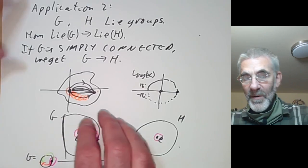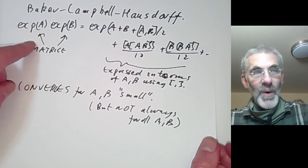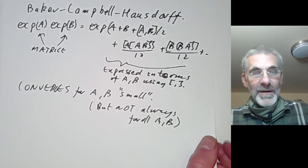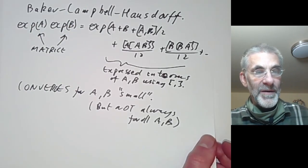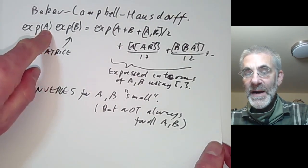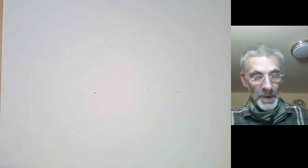Now we'll start explaining how to prove the Baker-Campbell-Hausdorff formula. The formula is not really about any particular Lie algebra — we can think of it as a formula about the free Lie algebra on A and B, an algebra generated by A and B where the only relations are the axioms for a Lie algebra. If we can prove this for a free Lie algebra on two generators A and B, it will automatically be true for all Lie algebras (convergence issues aside).